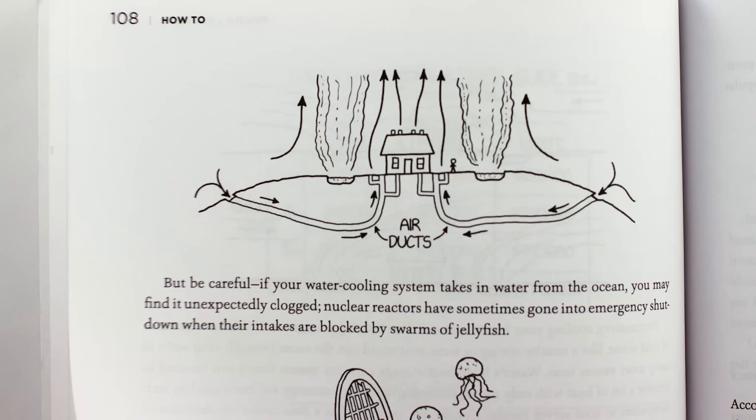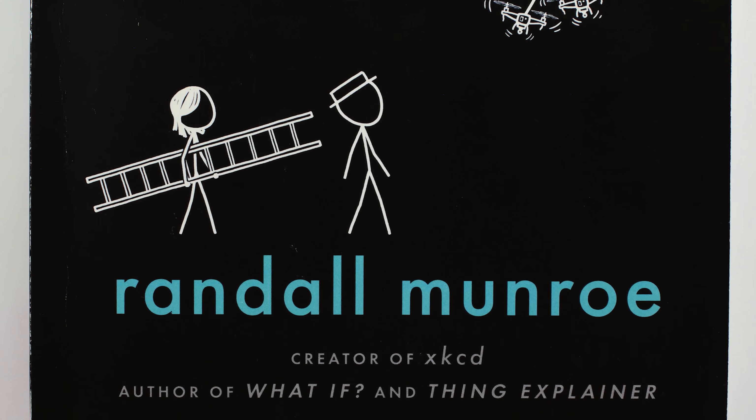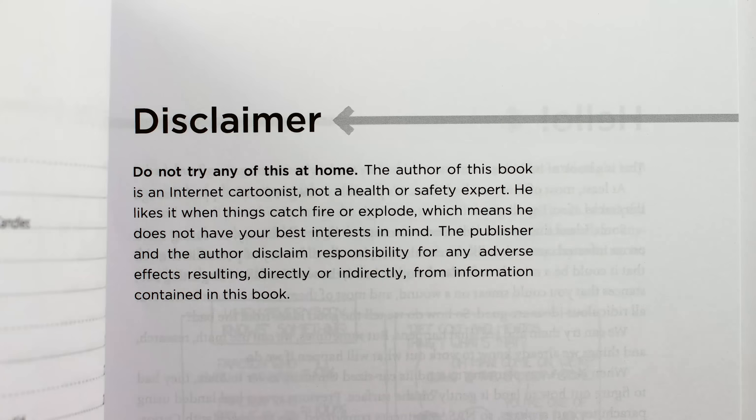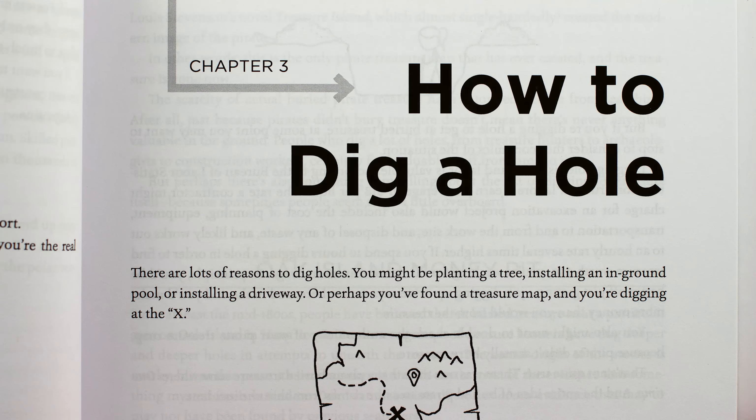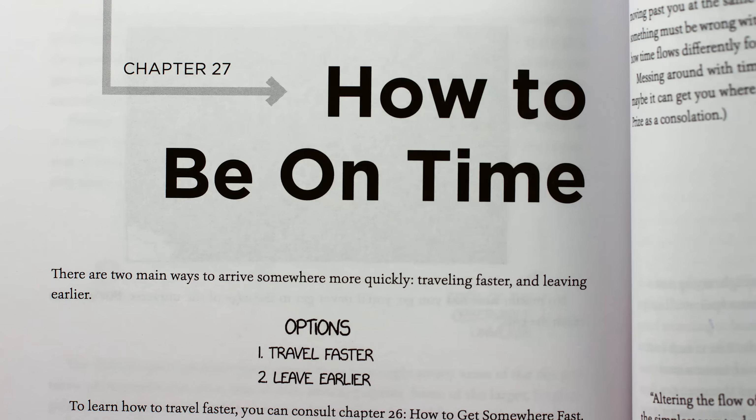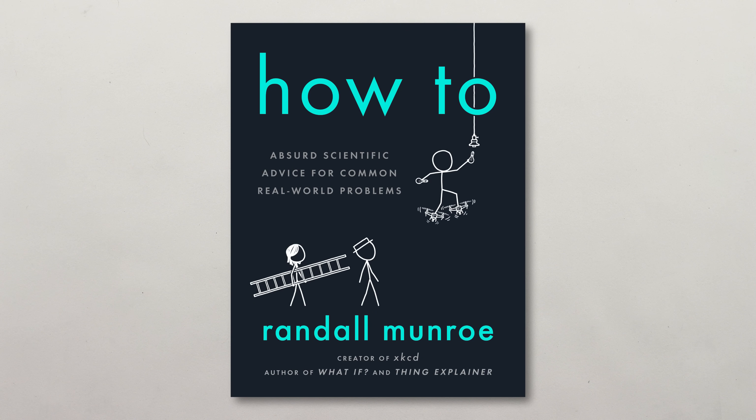And for that, you need to check out the full lava moat instructions available in the book How To by Randall Munro, which this video is based on, and supported by. How To is an absurd and entertaining self-help guide full of ridiculous over-the-top advice about everything from how to dig a hole, to how to be on time, to how to ski, to how to catch a drone. You can find a How To guide for how to obtain a copy of How To in the video description. And a big thanks to Randall and How To for supporting and inspiring this How To video.